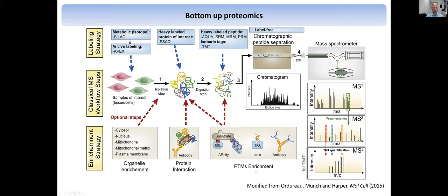Now we get to a full picture of what I showed before. We have this workflow, and of course you need to quantify. There are different methods. One is to go label-free — that's what I just showed you — you shoot one sample after the other, look at the intensities of the first peak, the peptide intensities, and quantify from there.